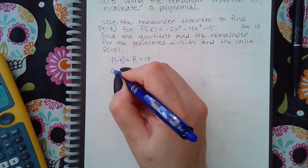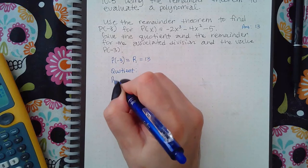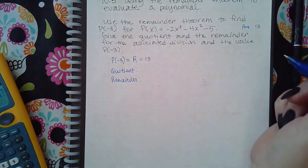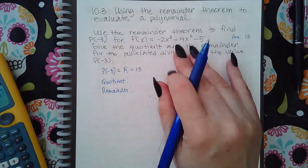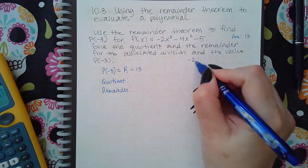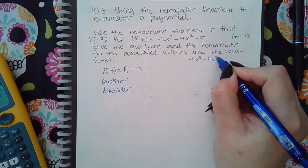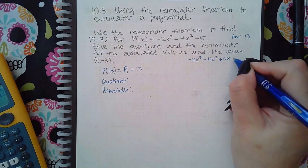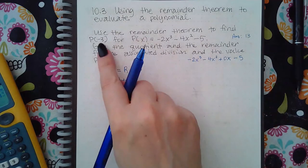I can't get the quotient and remainder unless I do the synthetic division. First thing I need to do is make sure this is in descending order and that all the missing terms are filled in. I have x³, I have x², I do not have x¹, and I do have constants.